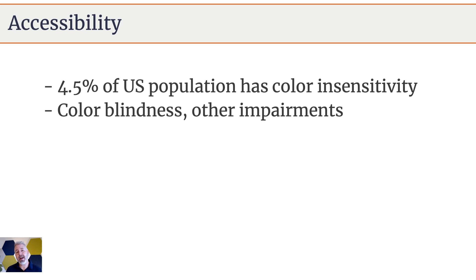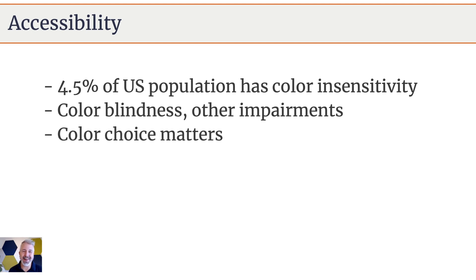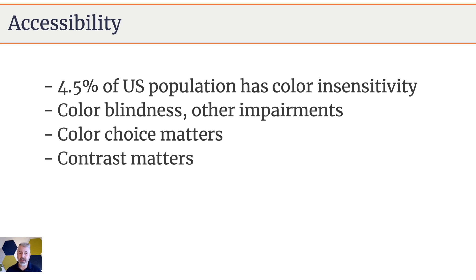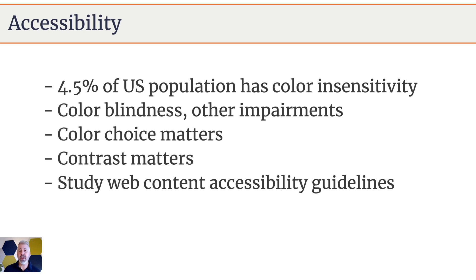This really means color blindness and other impairments, and we need to account for this use case because we want to make media that everybody can use. That means we have to think about things like color choice, what colors we're using, what contrast we're using in terms of how words and backgrounds work together. We need to study some of the web content accessibility guidelines and be able to apply those to our videos — that even means thinking about how we animate words on the screen.